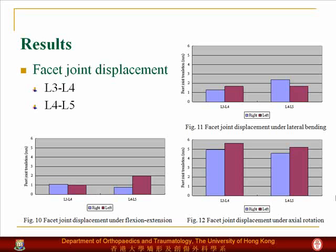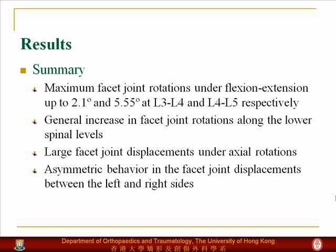As you can see in the results, measuring the facet joint displacements in both L3-L4 and L4-L5, we could see very similar values in all directions of motion. The maximum facet joint rotations under flexion-extension motion are up to 2.1 degrees at L3-L4, while at L4-L5 it is up to 5.5 degrees, showing an increasing trend in facet joint rotations toward the lower spinal segments. We were also able to detect a very large facet joint displacement under axial rotation, and we were able to prove asymmetric behavior between the left-hand and right-hand side facet joints.